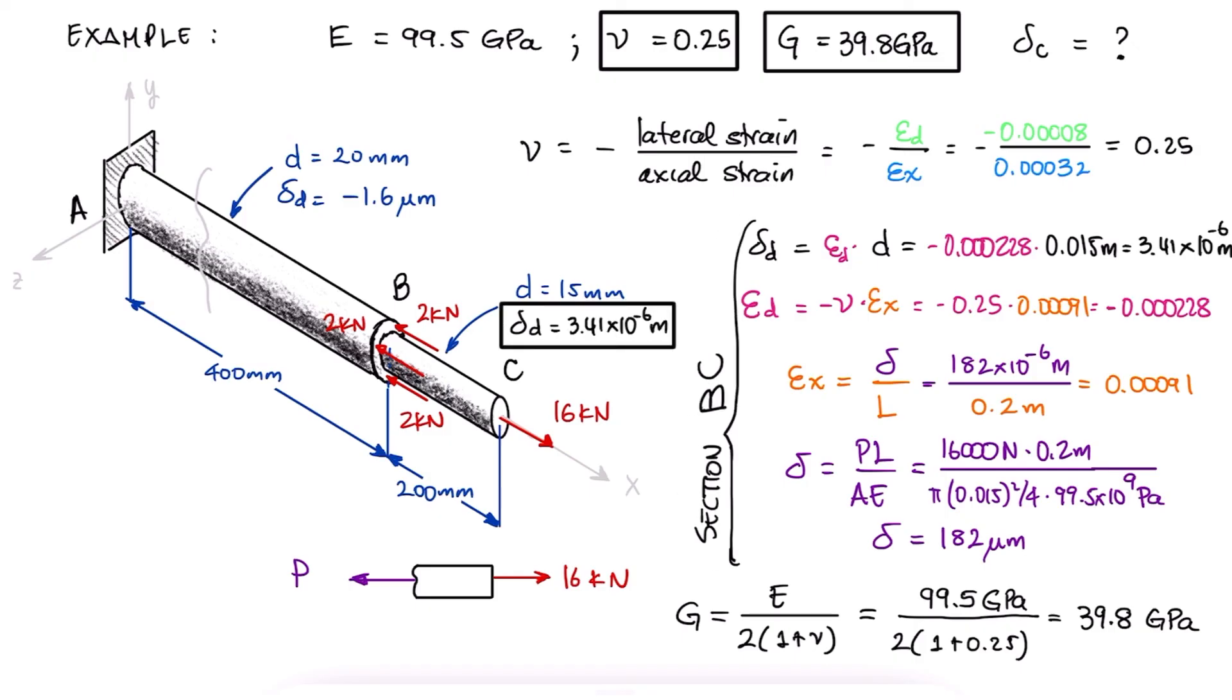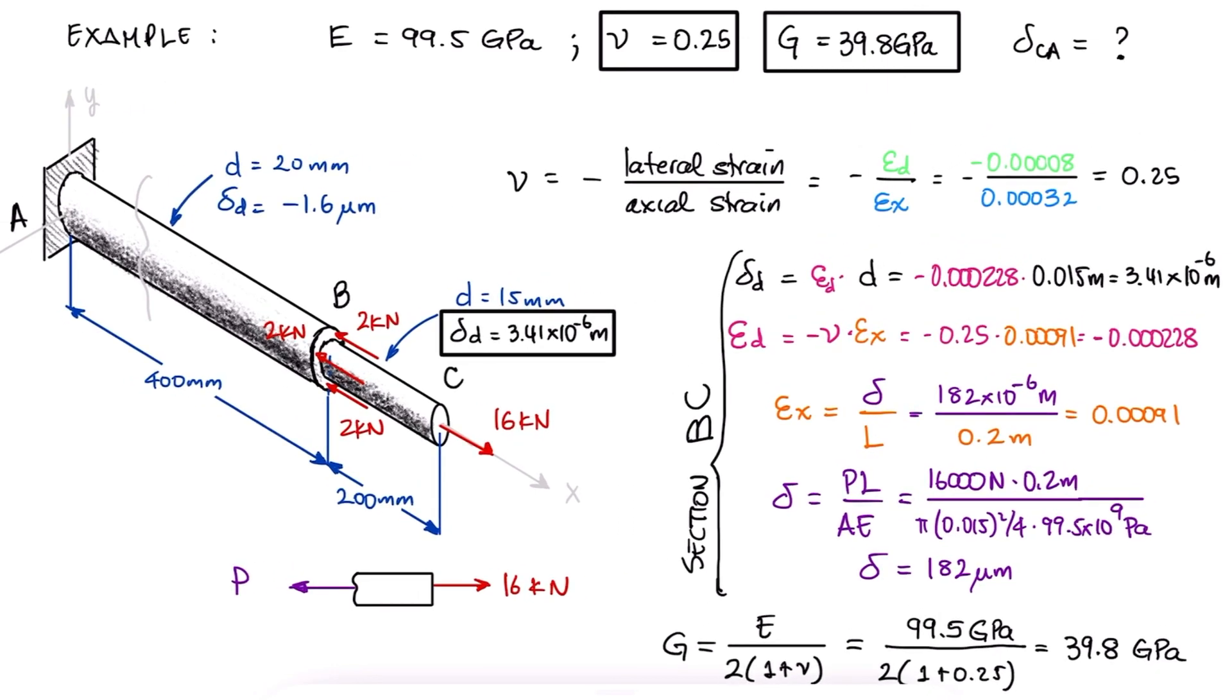Finally, if we want the displacement of C, we probably want that with respect to a surface that is not moving, in this case the wall A. Delta CA would be equal to delta CB plus delta BA, and these displacements we already found. 182 microns for delta CB...